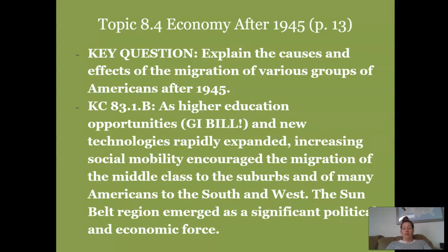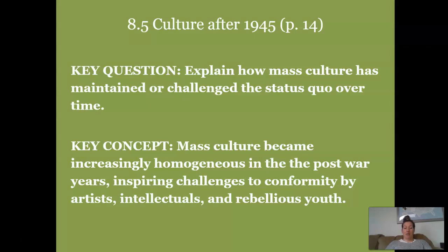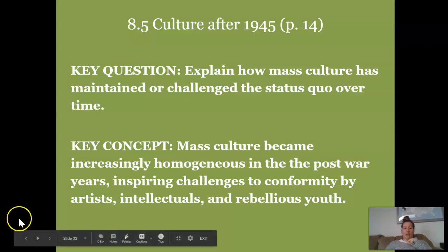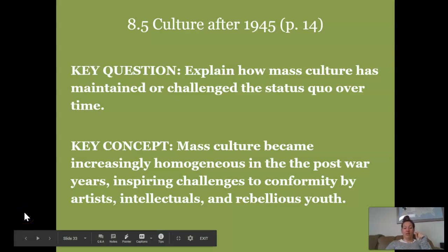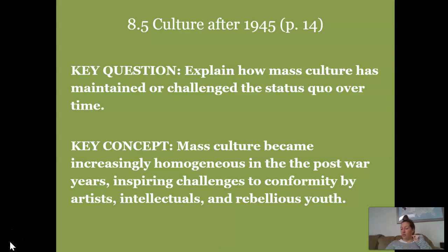To wrap up: the causes of economic growth after World War II were the burgeoning private sector, federal spending on highways and military R&D, the baby boom, and technological development. On page 13, the next topic is the Sunbelt: explain the causes and effects of migration of various groups of Americans after 1945 — the GI Bill, new technologies, increased social mobility, migration to the suburbs, and the Sunbelt region emerging as a significant political and economic force. A preview of Key Concept 8.5 on culture: mass culture became increasingly homogeneous in the post-war years, inspiring challenges to conformity by artists, intellectuals, and rebellious youth. That's where we'll pick up next time.